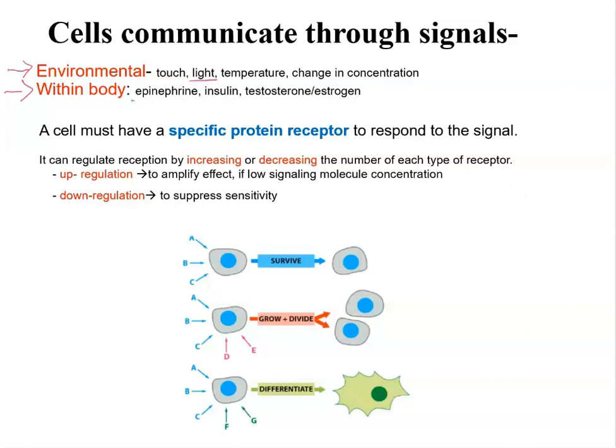Here's epinephrine, the stress hormone, released by adrenal glands — it causes a fight or flight response. Insulin is released by pancreatic cells and is going to tell your cells to uptake glucose. Hormones such as testosterone and estrogen will also affect gene expression.